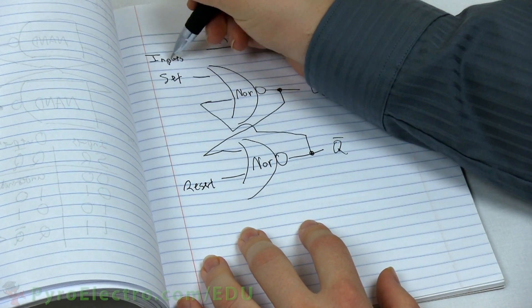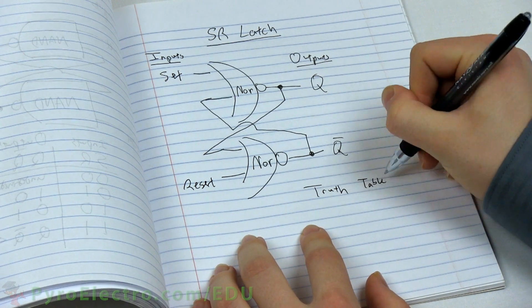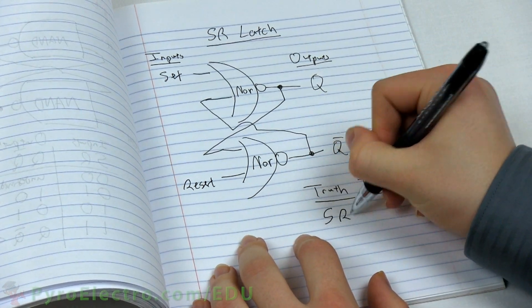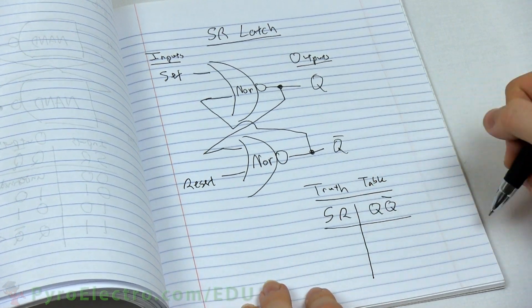Well, an amazing thing happens when we make a circuit like this. It becomes what is known as a bistable element. Here's the truth table that explains how the two input signals affect the output.